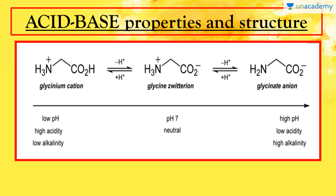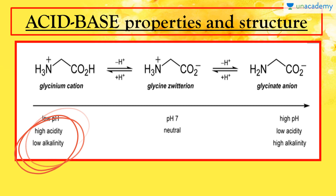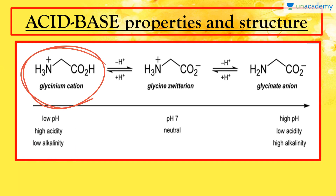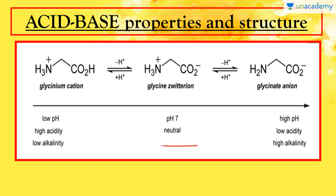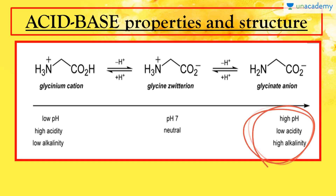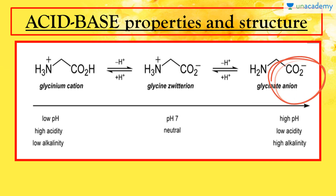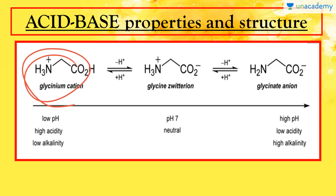Regarding the acid-base properties of glycine, in aqueous solution glycine is amphoteric, meaning it can act as both an acid and a base. At low pH, the molecule becomes protonated and forms the positively charged glycinium cation. At neutral pH, it acts as a zwitterion, containing both positively and negatively charged groups. At high pH, it has an anionic group — meaning at low pH it donates protons, and at high pH it accepts protons.